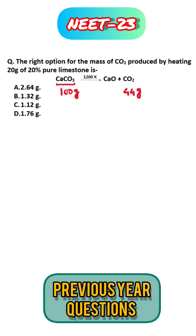First we find out how much limestone is taken in this reaction. The 20 grams of limestone is taken but it is only 20% pure. So the pure limestone is what? It is 20 grams at 20% pure. That's why the answer is 4 grams.